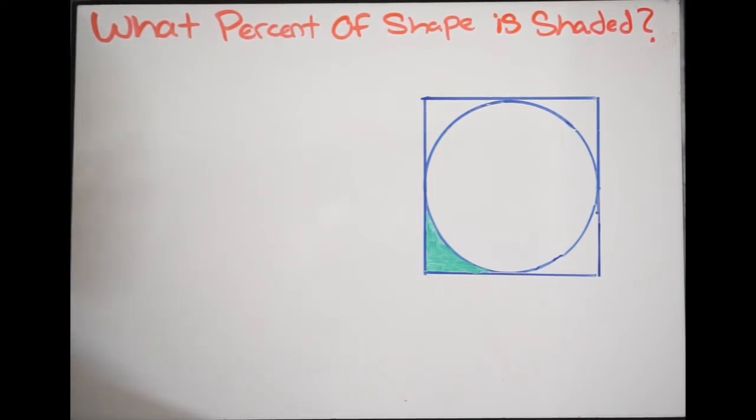So in this example, we're being asked what percent of the shape is shaded. You can see here that I have a circle inscribed in a square, and we have this small region here in the corner that is shaded.